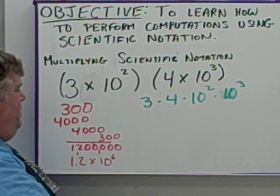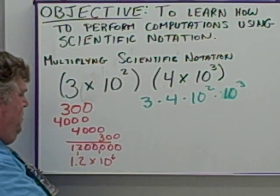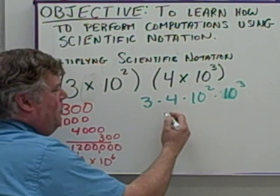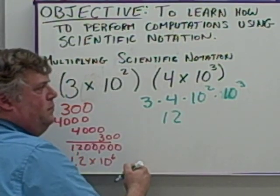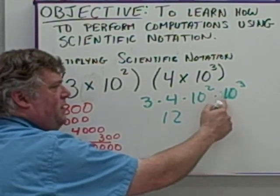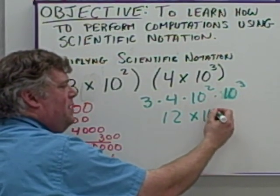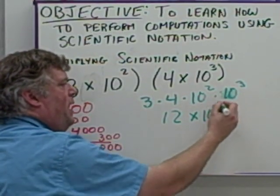Now, when we do that, we end up getting 3 times 4 is 12. Like bases being multiplied, we add the exponents. We get times 10 to the positive 5.